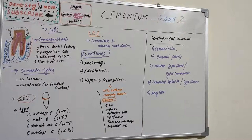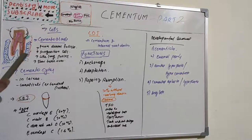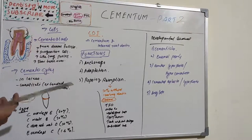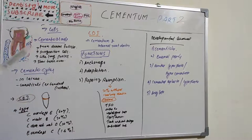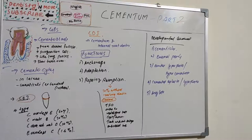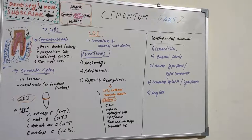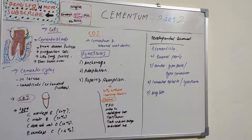Cementocytes are found in lacunae, and the channels in which their processes extend are known as canaliculi. The central cell mass may appear round or oval, measuring eight to fifteen micrometers, with pale basophilic cytoplasm and a centrally located nucleus.